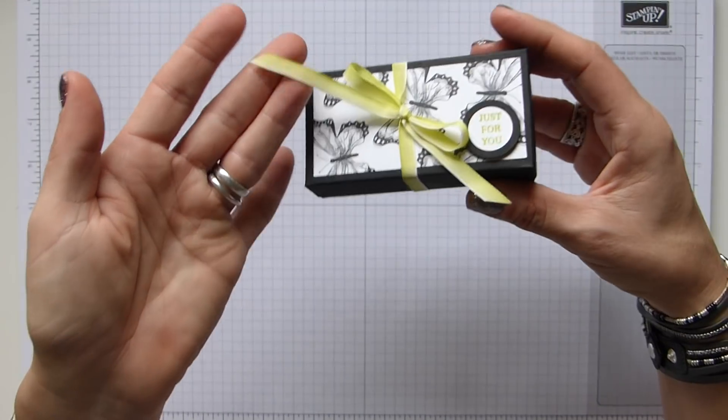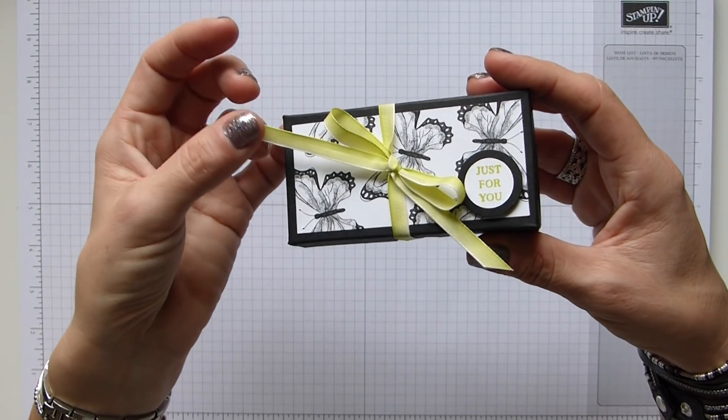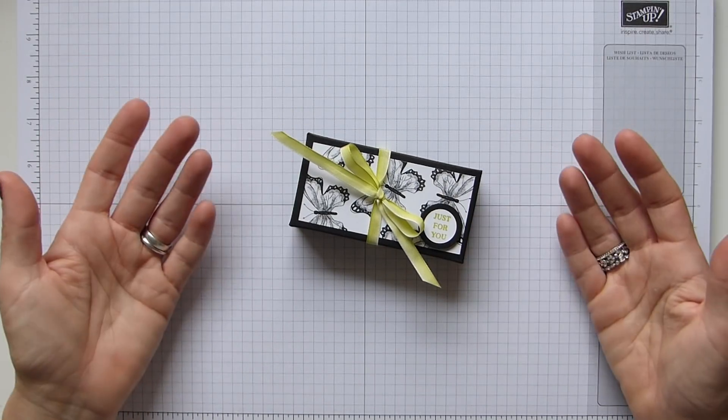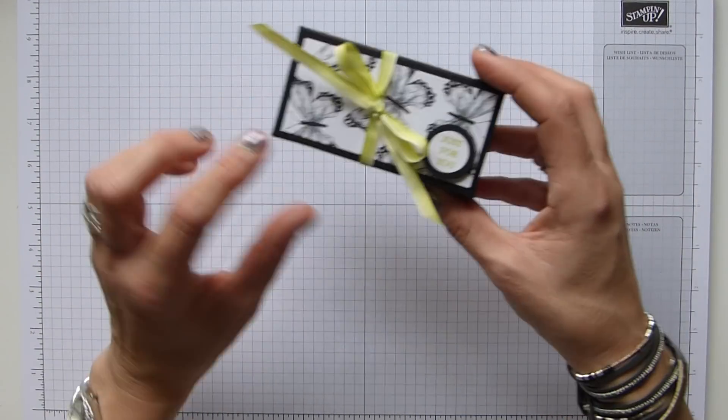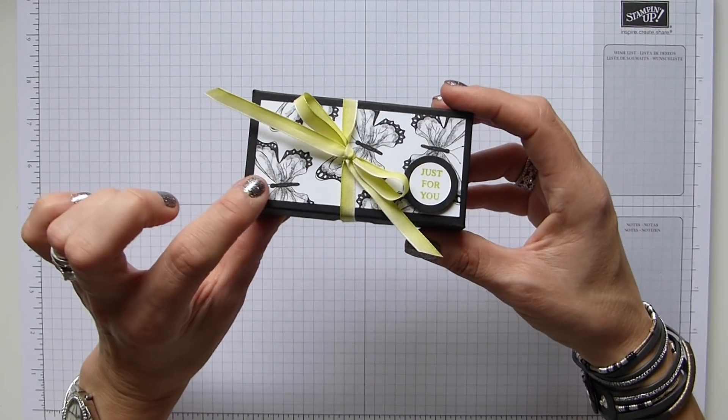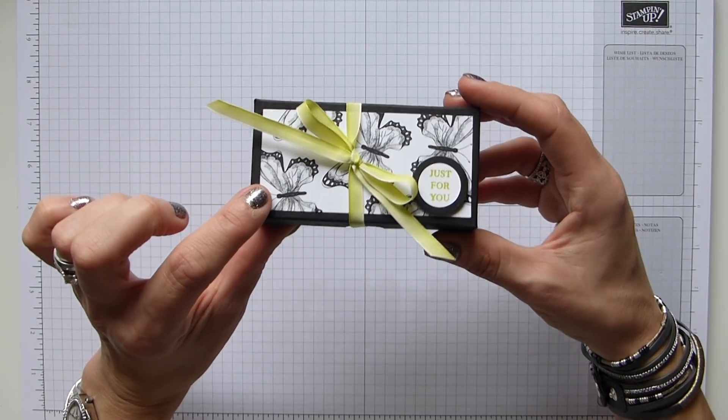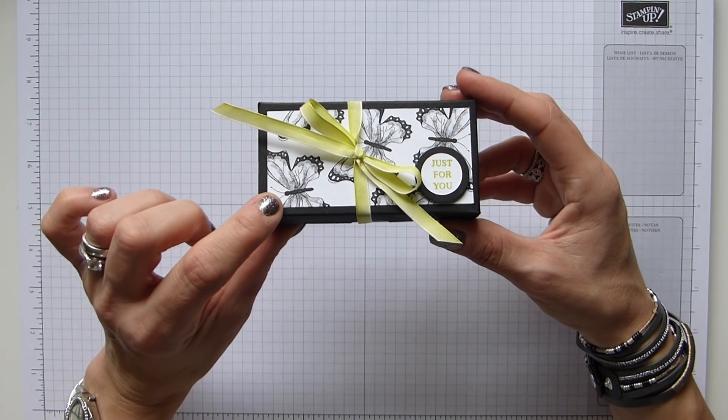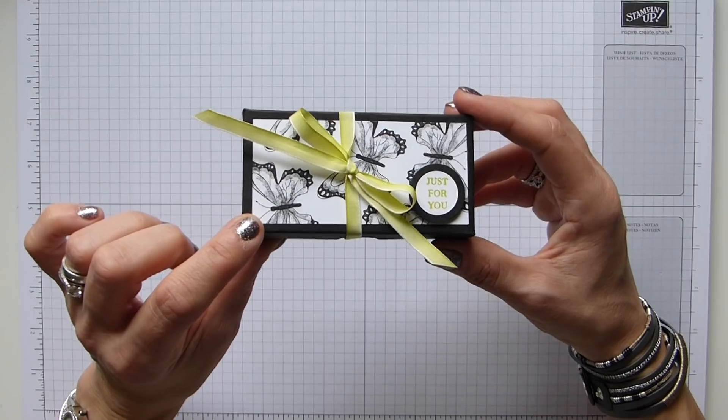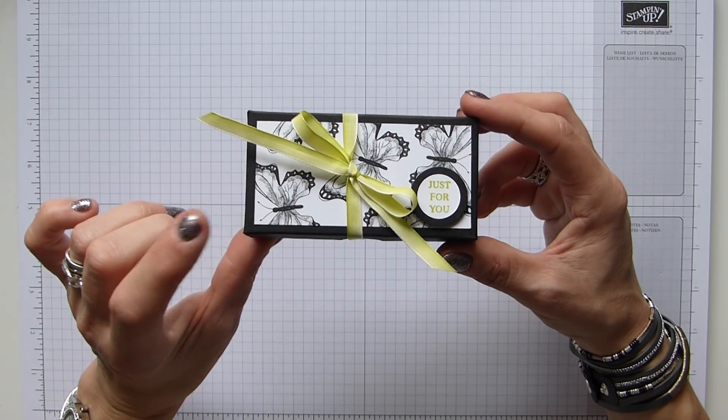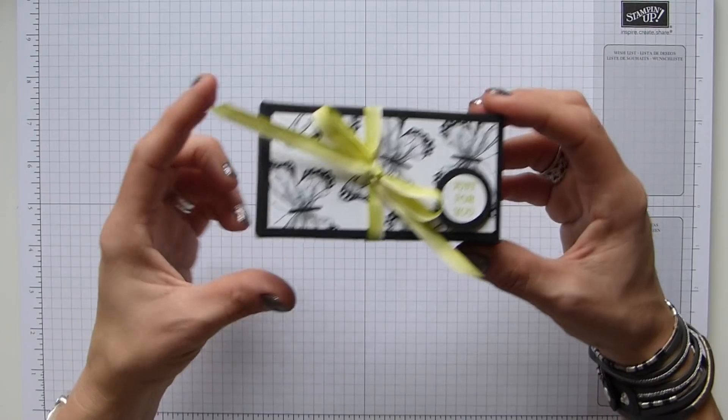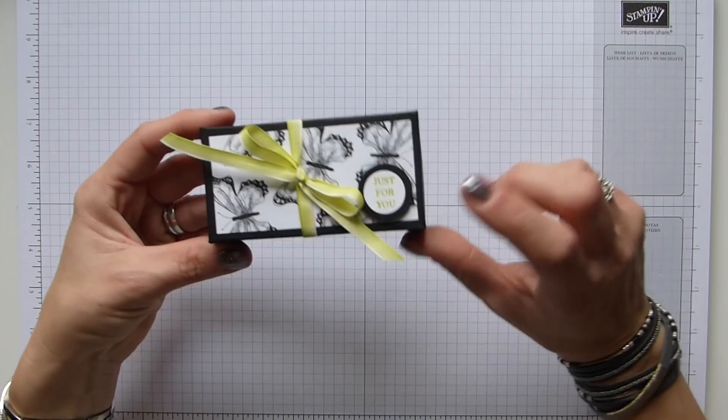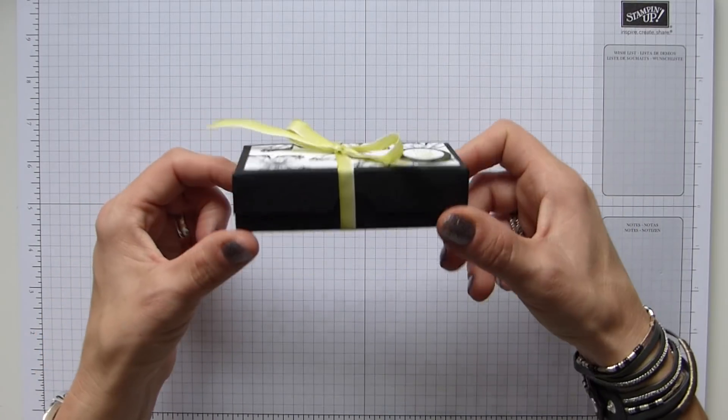I've never been a fan of ombre ribbon, but yet for some reason I love this. Bizarre I know, so I don't think that I can say I'm not a fan anymore because clearly I like it. So what I've used here is the Botanical Butterflies DSP, which is a celebration item. It's gorgeous. It is double sided and I just think this is a cute little box.